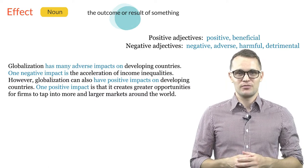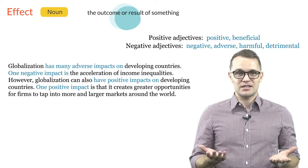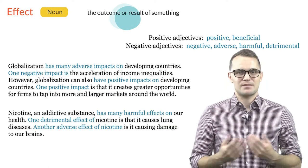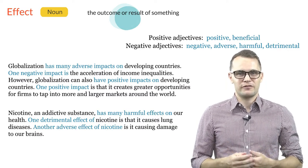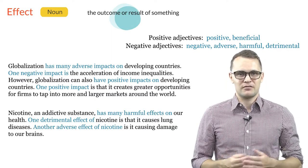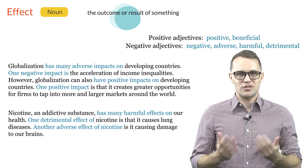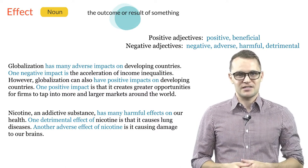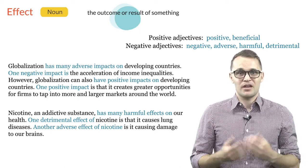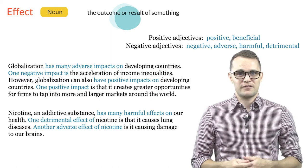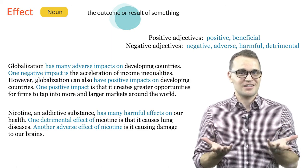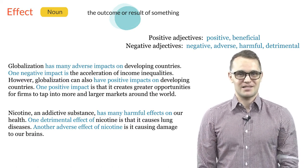Example number two: nicotine, an addictive substance, has many harmful effects on our health. One detrimental effect of nicotine is that it causes lung diseases. Another adverse effect of nicotine is it causing damage to our brains.